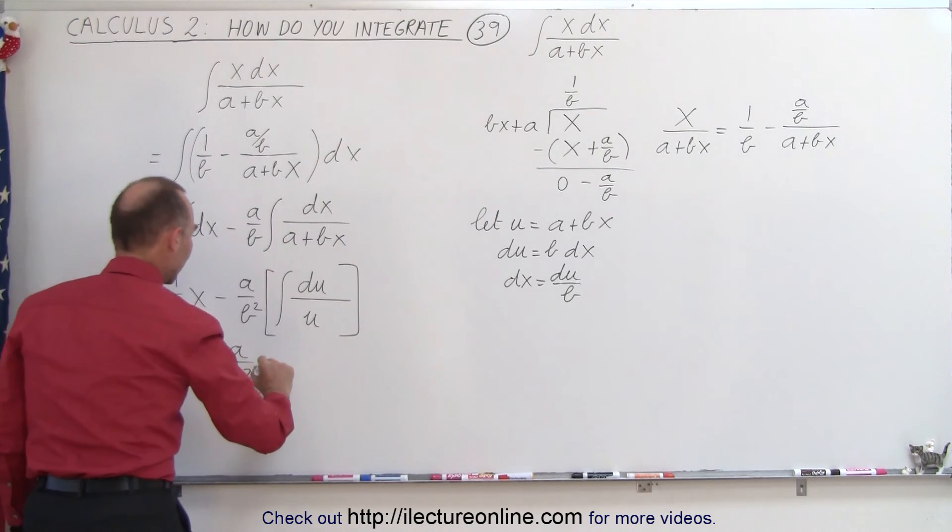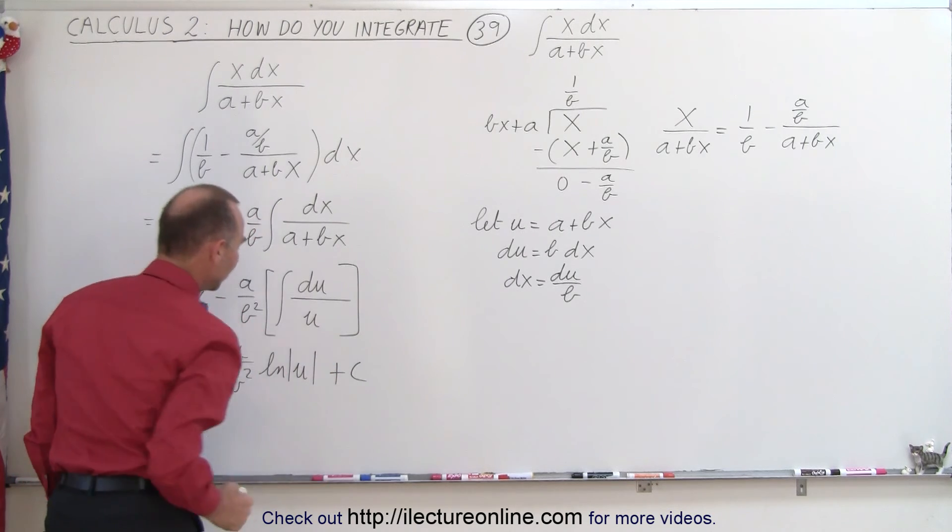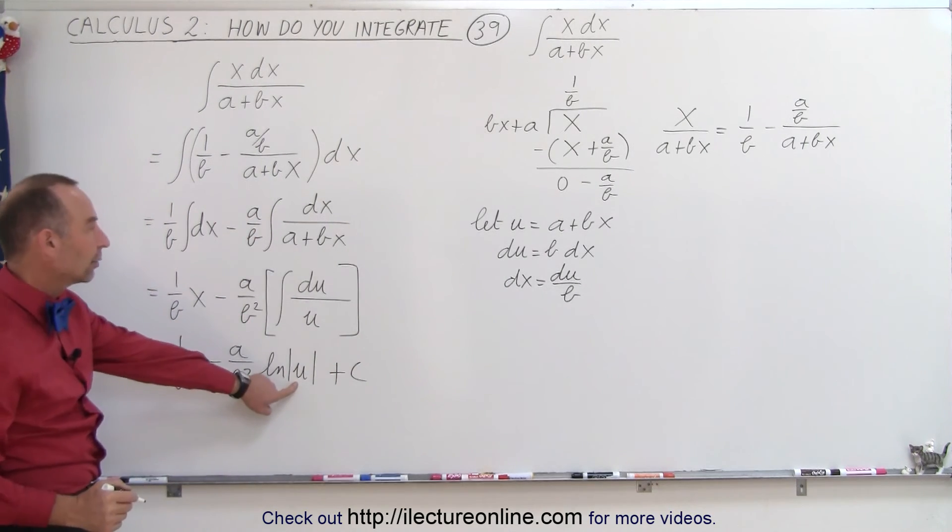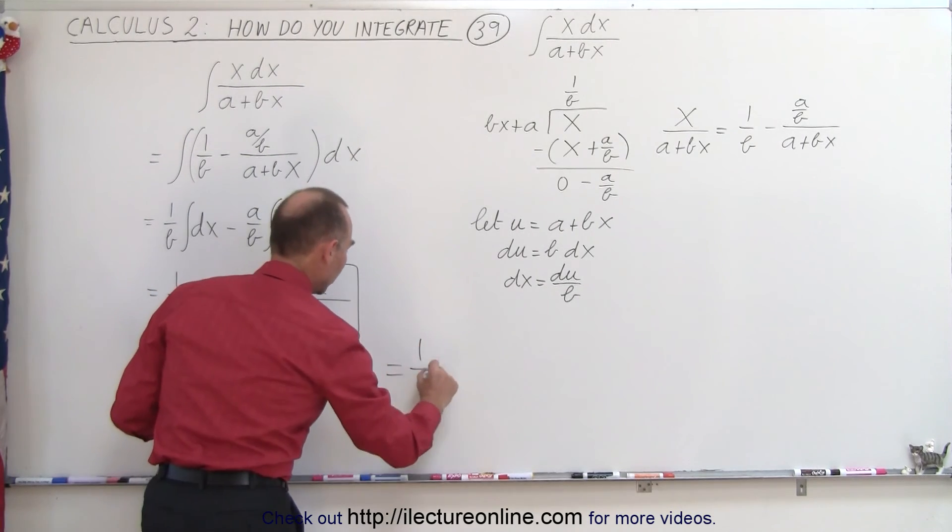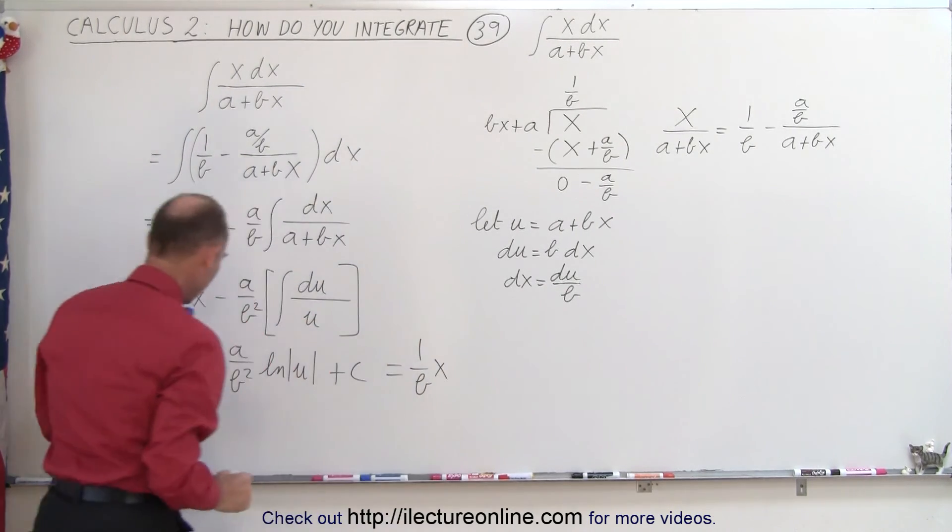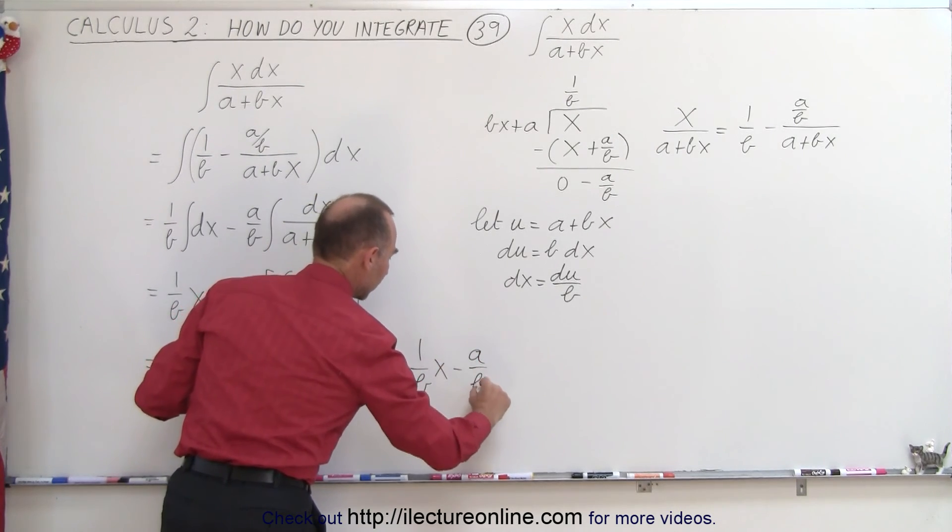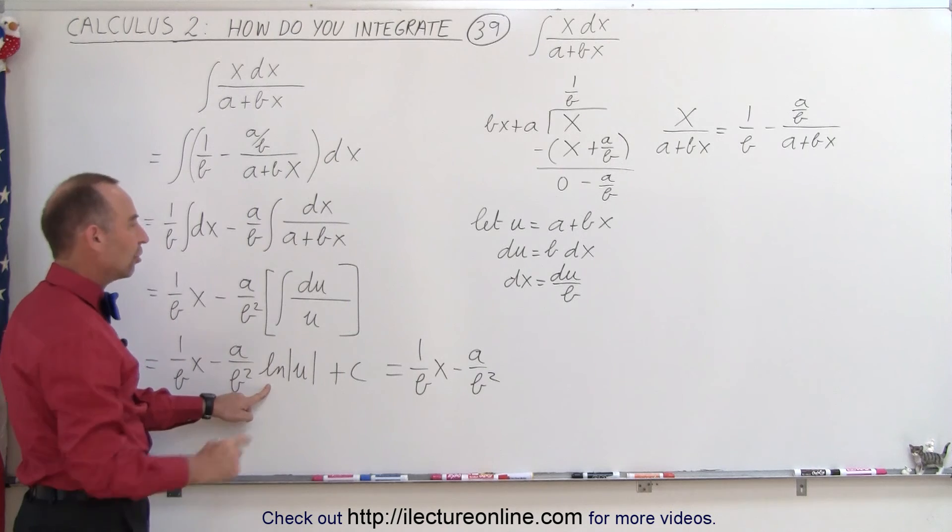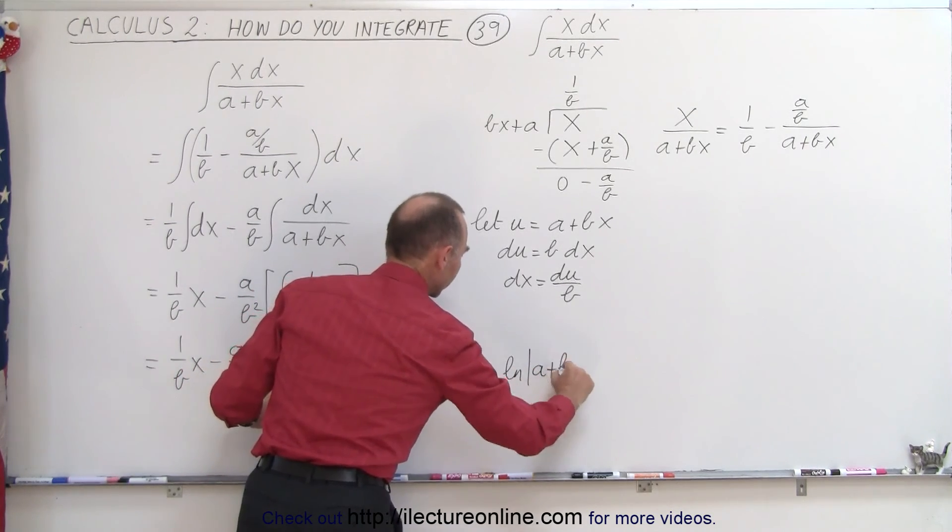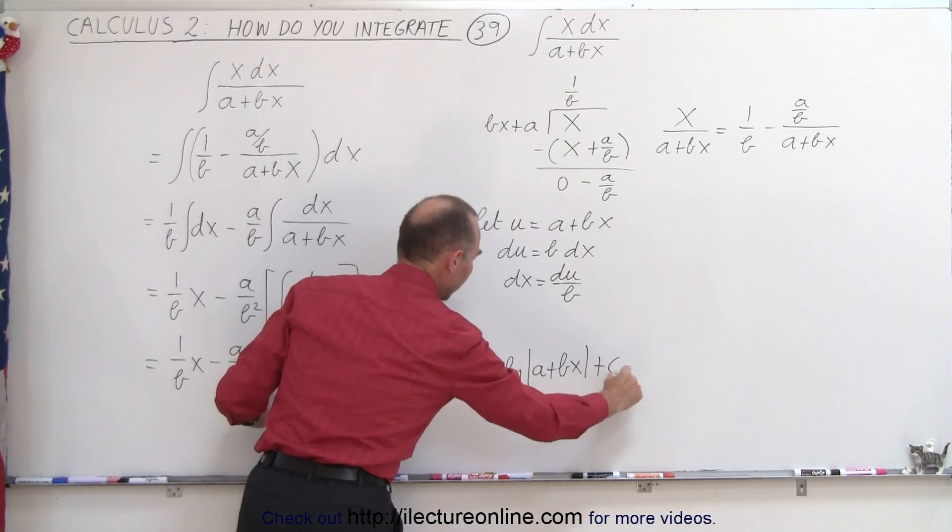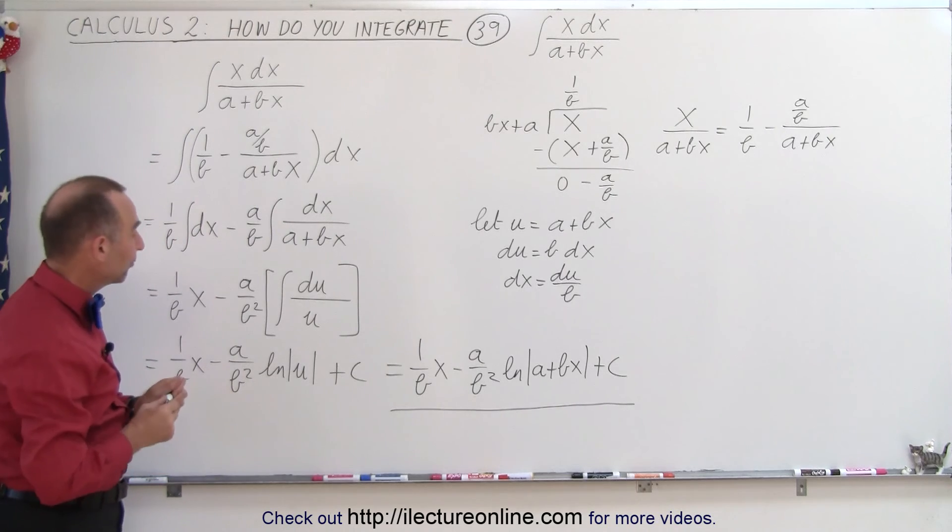So this becomes equal to 1 over b times x minus a over b squared times the natural log of u. And now we can add the constant of integration. And, of course, we're going to substitute for u a plus bx. So this becomes equal to 1 over b times x minus a over b squared times the natural log of a plus bx and a constant of integration. And that's then the result of that integral.